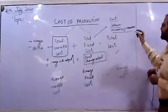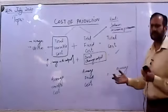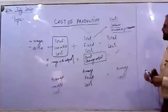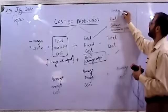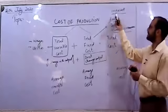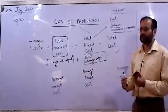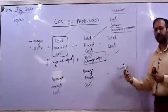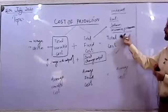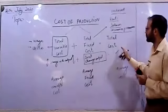Other examples of fixed cost include insurance premiums — installments you pay for your building, premises, or stock — and these have to be paid even if you are not producing. Interest on a loan is also paid on a fixed basis and is not affected by changes in production. Even if the firm is growing and increasing its profits, these costs remain the same. Adding total variable cost and total fixed cost together gives us the total cost.